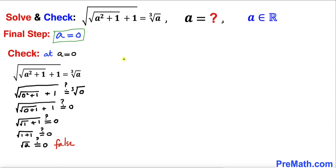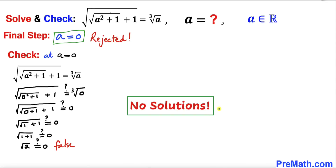Since the square root of two does not equal zero, this is a false statement. Therefore, a equals zero is an extraneous solution and is rejected. We conclude that there are no real solutions to this given problem. Thanks for watching, and please don't forget to subscribe to the channel for more exciting videos.